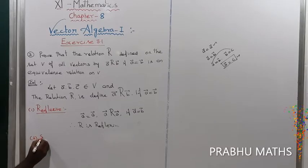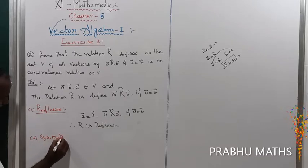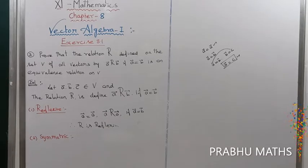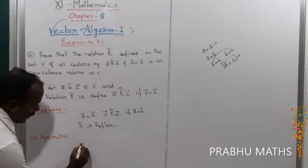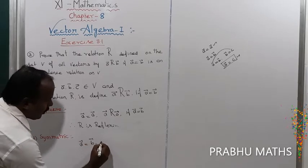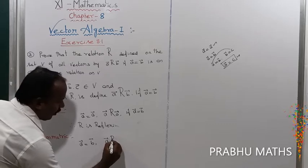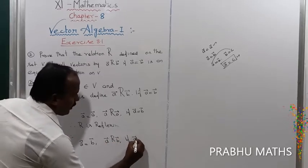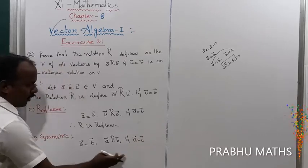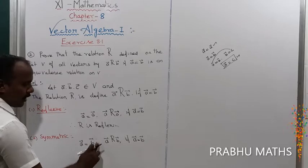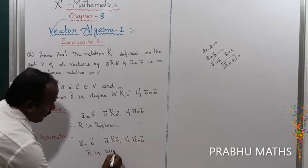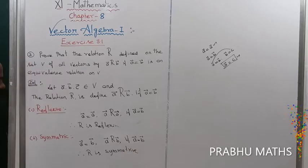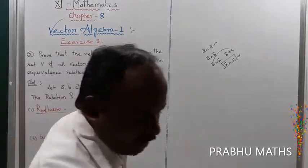Next, the second property is symmetric. Symmetric means A is equal to B. Consider A is related to B, if A is equal to B. So A equals B means B equals A. This condition is satisfied, so relation R is symmetric.